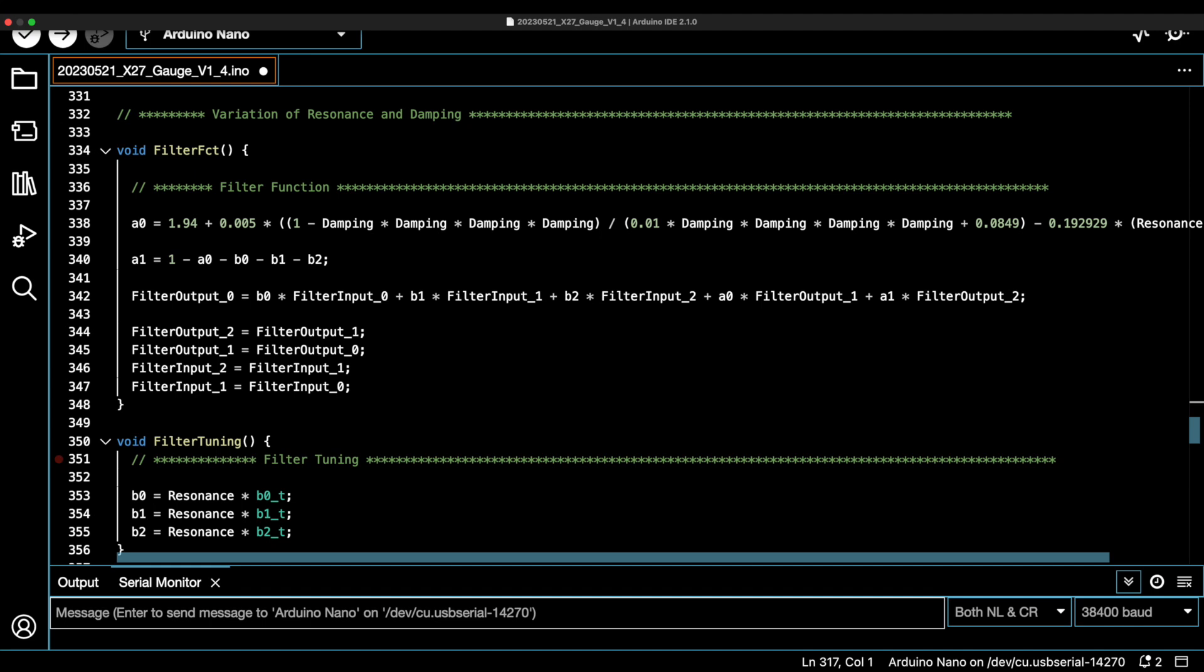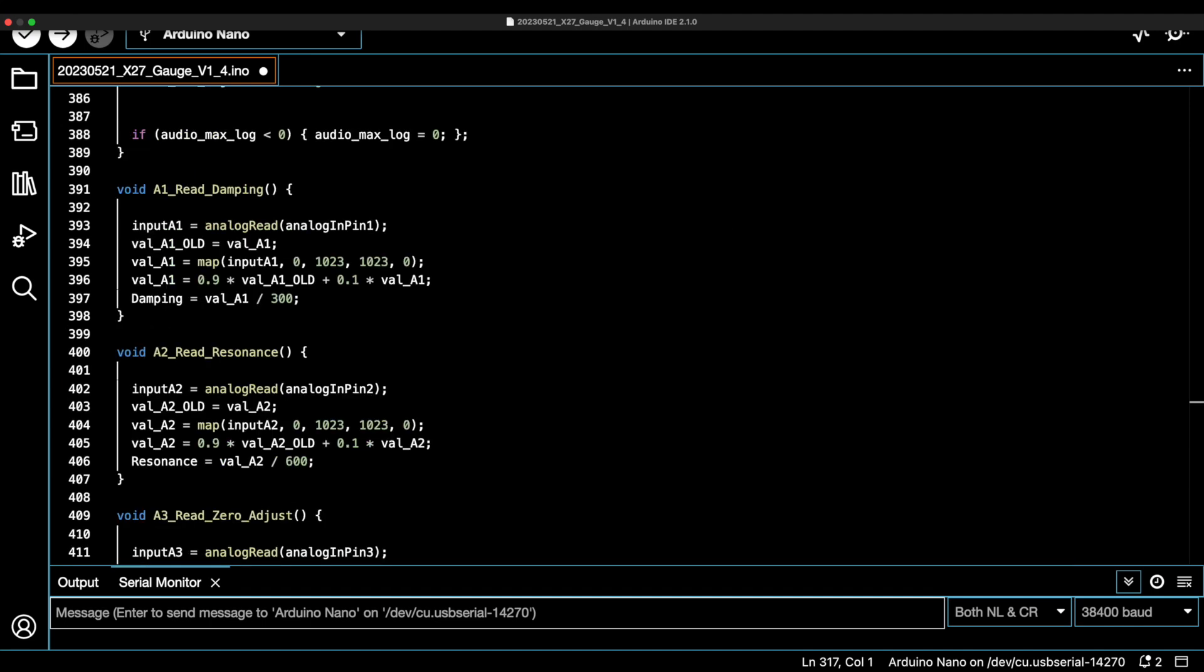Our Arduino controller allows us to set the parameters of resonance frequency and damping with a potentiometer. This part of the code is pretty much the standard to measure the voltage value of a potentiometer and turn it into a digital value. This line does an averaging so that small disturbances are averaged out. And in the end, we get the value for the damping, which we need for our formulas that calculate the filter coefficients.